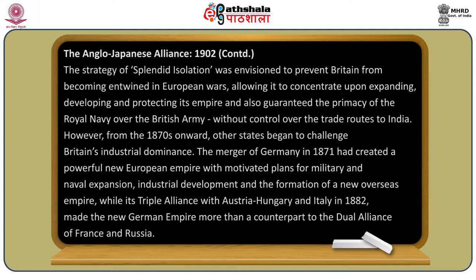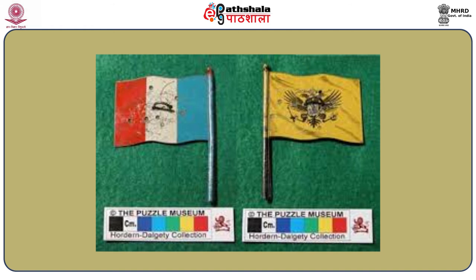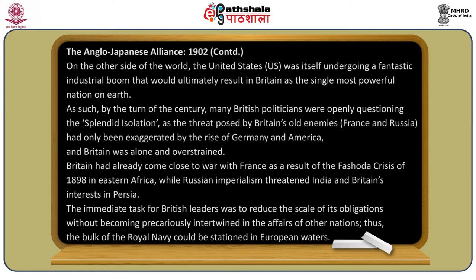However, from the 1890s onward, other states began to challenge Britain's industrial dominance. The unification of Germany in 1871 had created a powerful new European empire with motivated plans for military and naval expansion, industrial development, and the formation of a new overseas empire. Its Triple Alliance with Austria-Hungary and Italy in 1882 made the new German empire more than a counterpart to the dual alliance of France and Russia.